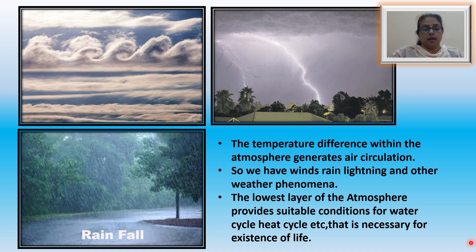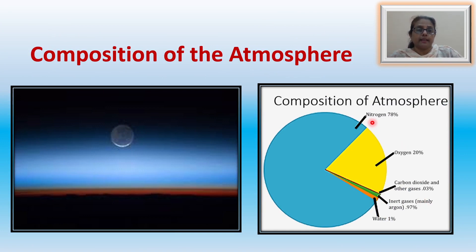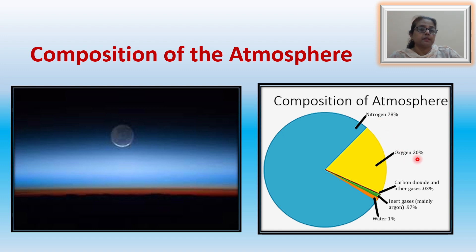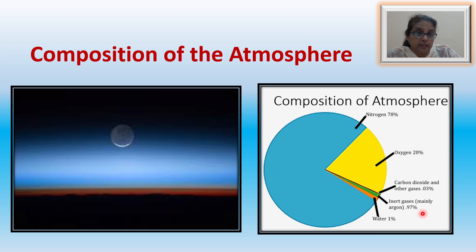Let us now learn about the composition of the atmosphere. The composition of the atmosphere has 78% nitrogen and about 20% oxygen. Carbon dioxide and other gases are very less, to the tune of about 0.03%. There are several inert gases, mainly argon, hydrogen, helium, and methane, and they constitute about 0.97%. Water vapour constitutes about 1% of the atmosphere.